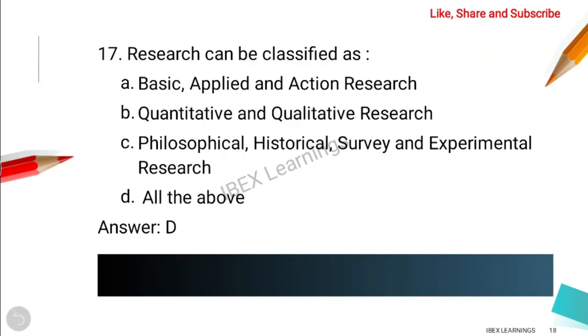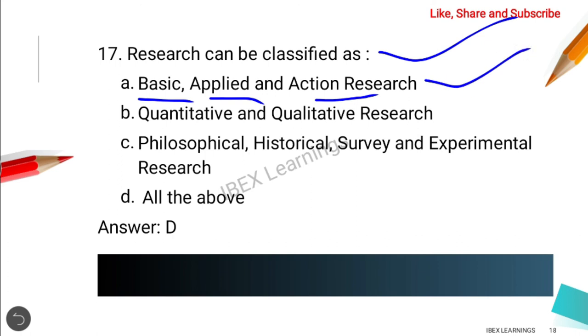The next question is: research can be classified as? Basic research can be applied as action research. Research can also be quantitative and qualitative. It is also classified as philosophical, historical, survey, and experimental.